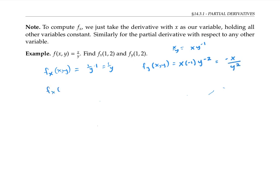So f_x(1,2), by plugging in 1 for x and 2 for y, I get 1/2. And f_y at (1,2) is negative 1/4.